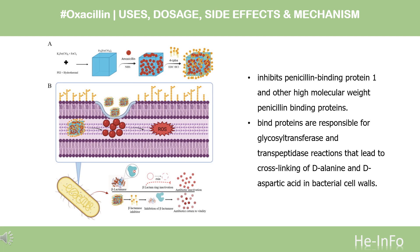Mechanism of Action. By binding to specific penicillin-binding proteins (PBPs) located inside the bacterial cell wall, oxacillin inhibits the third and last stage of bacterial cell wall synthesis. Cell lysis is then mediated by bacterial cell wall autolytic enzymes such as autolysins. It is possible that oxacillin interferes with an autolysin inhibitor.